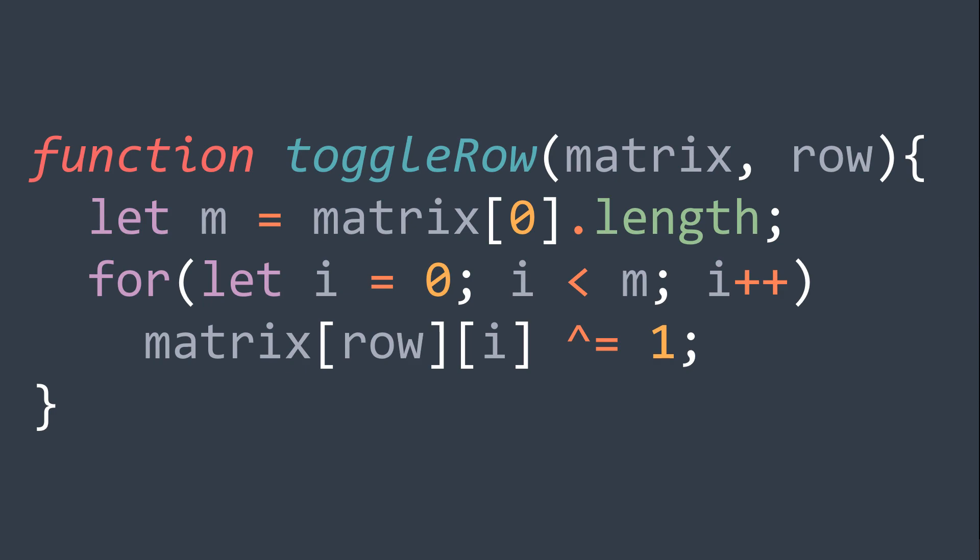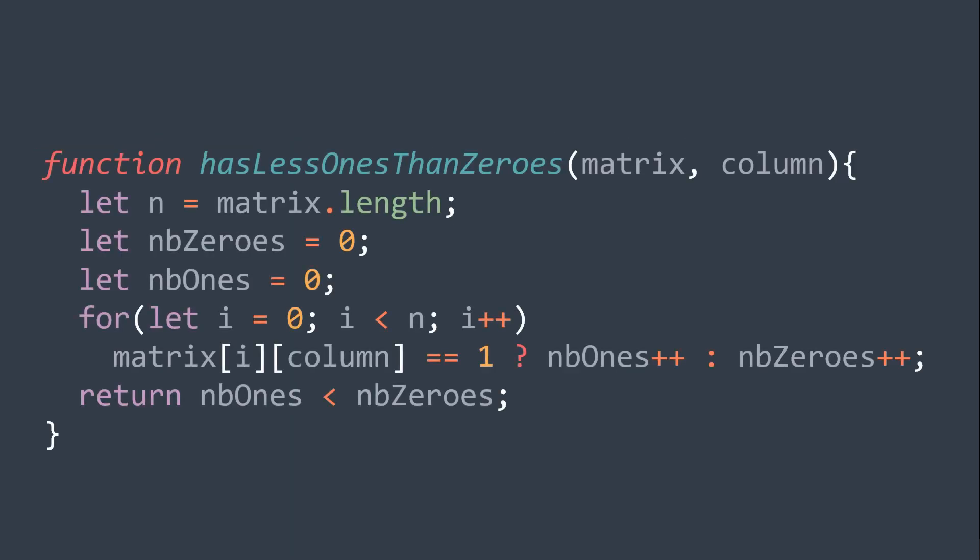Now to check if a column has less ones than zeros, we create a function that takes the matrix and the index of the column as parameters, then we create two counters, one to count the number of zeros, and one to count the number of ones. Then for each index i in the column, if it's equal to 1, we increment the ones counter, else we increment the zeros counter. After the loop, we return the result of this comparison, nb1s smaller than nb0s.